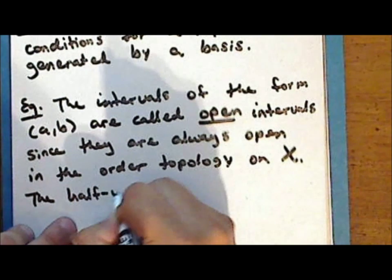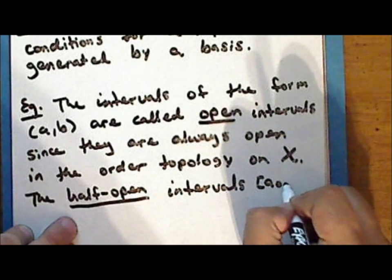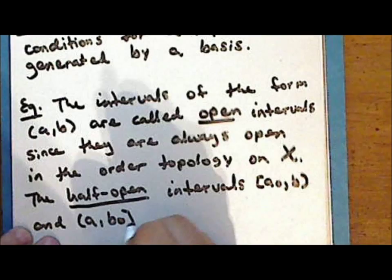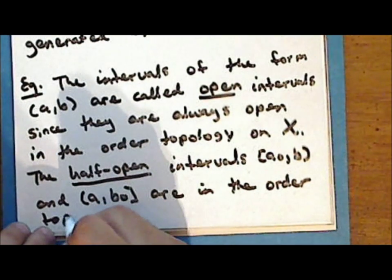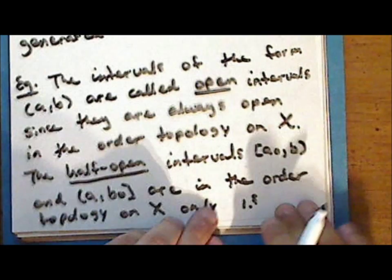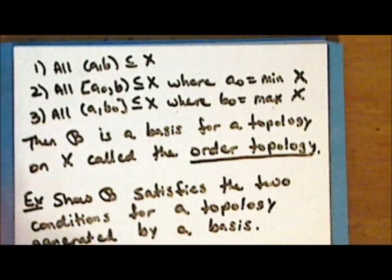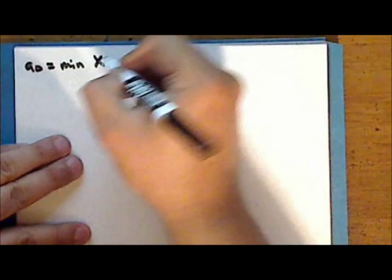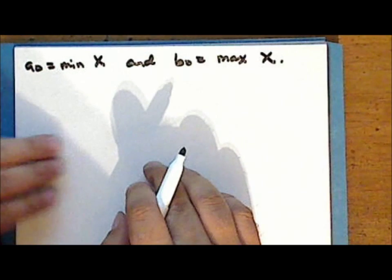The half open intervals from a-sub-nought inclusive of a-sub-nought to b, and from a to b-sub-nought inclusive of b-sub-nought, are in the order topology. Note that a-sub-nought is the least element and b-sub-nought is the greatest element, so the half open intervals are not always open.